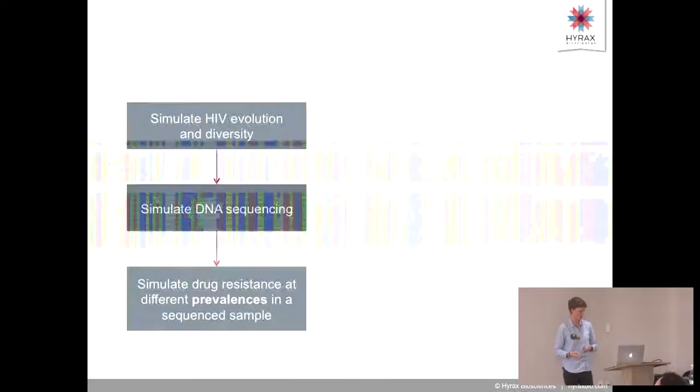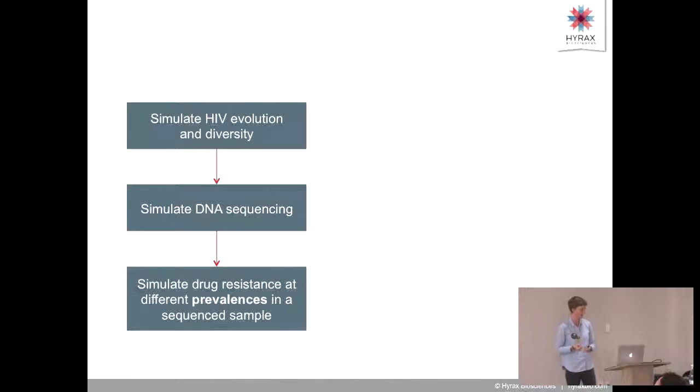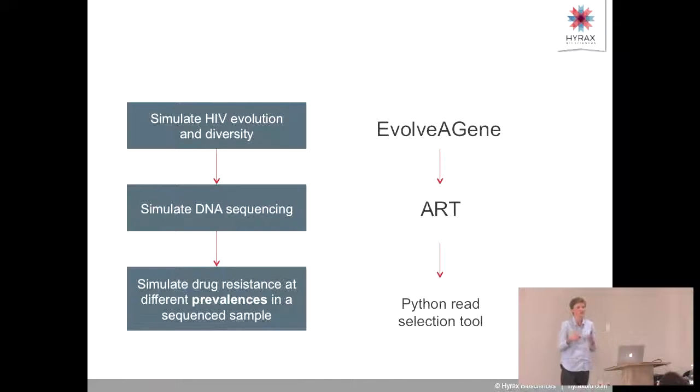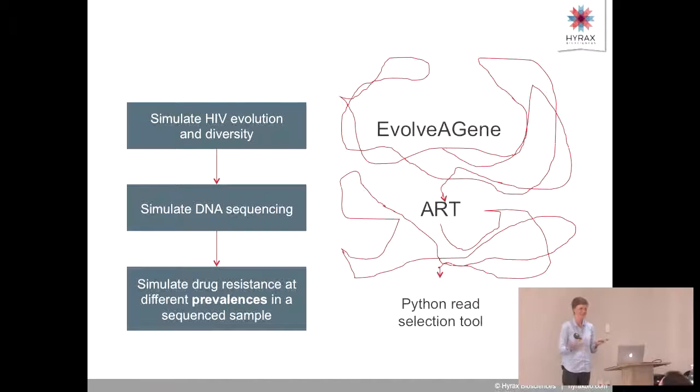So what we're going to do is three things. We're going to simulate HIV evolution and diversity, simulate DNA sequencing, and simulate drug resistance at different prevalences in a sequence sample. We're going to do it all in about 14 minutes. We're in luck, because two out of three of these steps have tools that can help us. There's a tool called EvolveAGene that can evolve DNA for us, and a tool called ART that's a really good simulator of the DNA sequencing process. We thought this is going to be easy. We're just going to combine EvolveAGene with ART and our own Python read selection tool. The end result looked a little more like that. Software stories grow in the telling, but we finally arrived at a pretty good place.